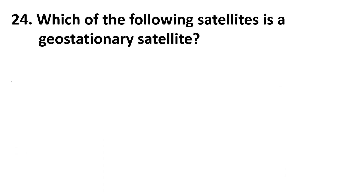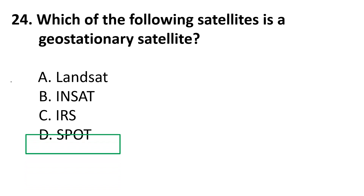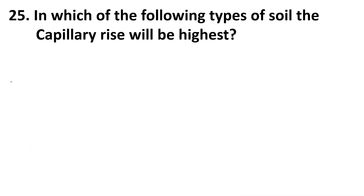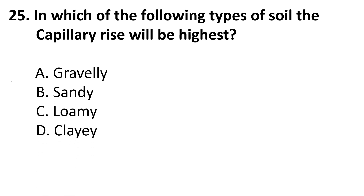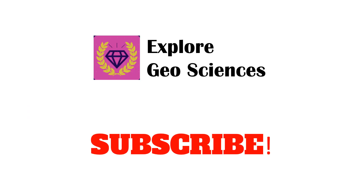Twenty-fourth question: Which of the following satellites is a geostationary satellite? Choices: A) Landsat, B) INSAT, C) IRS, D) SPOT. The correct answer is B, INSAT. Twenty-fifth question: In which of the following types of soil will capillary rise be the highest? Choices: A) Gravelly, B) Sandy, C) Loamy, D) Clayey. The correct answer is D, Clayey.